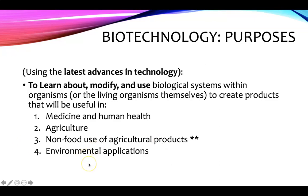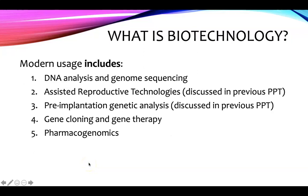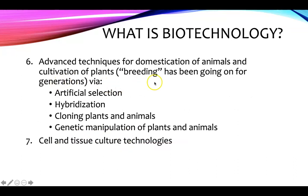such as making biofuels or biodegradable plastics, and also environmental applications. The modern usage includes DNA analysis and genome sequencing, assisted reproductive technologies, and pre-implantation genetic analysis. Both of these were discussed in a previous PowerPoint, and then gene cloning and gene therapy, a field called pharmacogenomics, and advanced techniques for domestication of animals and cultivation of plants.